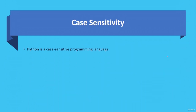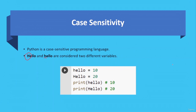Python is a case-sensitive programming language. For example, 'hello' and 'Hello' are considered two different variables — in the first, 'H' is capital, and in the second it's small. Here you can see the example: 'hello' is equal to 10 with all small letters, and 'Hello' is equal to 20 with a capital H. If you output the result you will get the value corresponding to the variable you assigned.